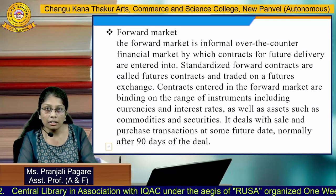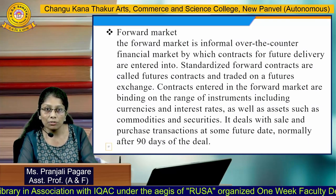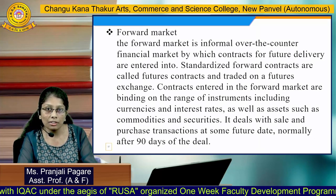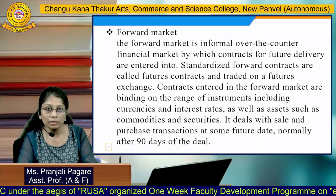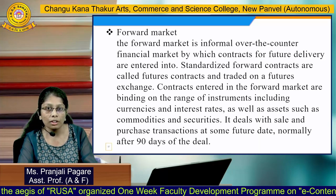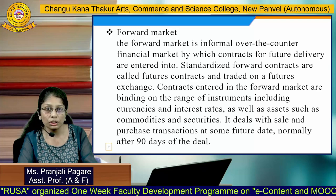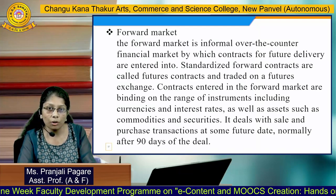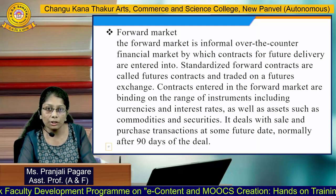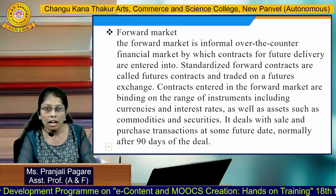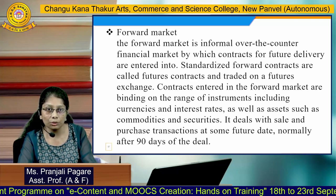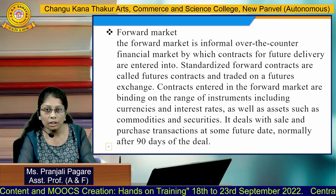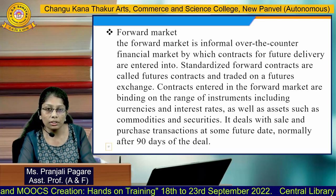The second market is the forward market. The forward market is an informal over-the-counter financial market by which contracts for future delivery are entered into. Standardized forward contracts are called futures contracts and are traded on a futures exchange. Contracts entered in the forward market are binding on a range of instruments including currencies and interest rates, as well as assets such as commodities and securities. It deals with sale and purchase transactions at some future date, normally after 90 days of the deal.